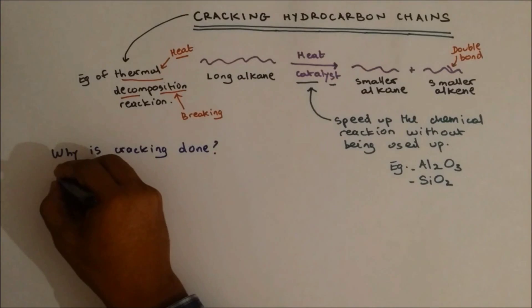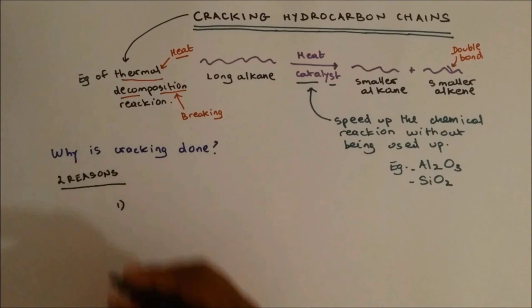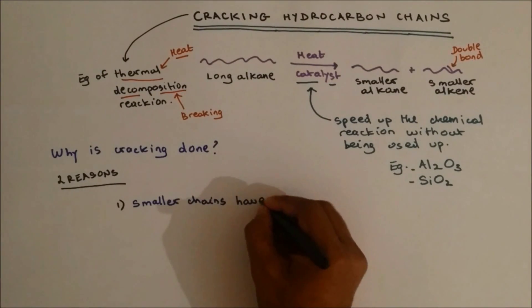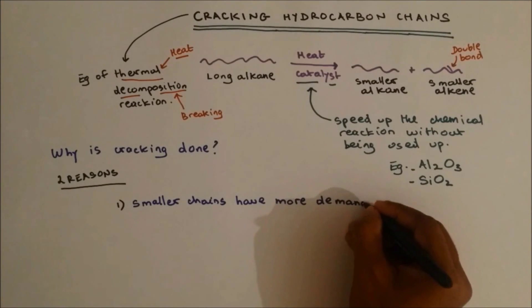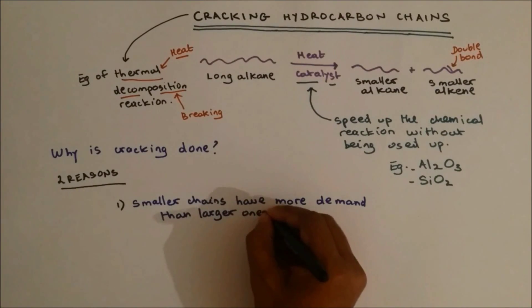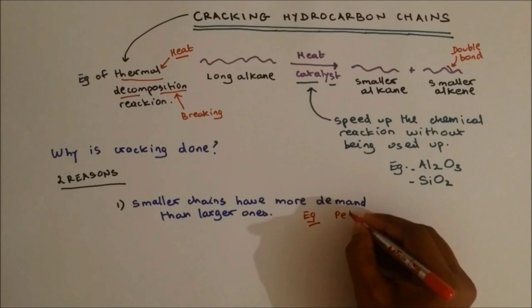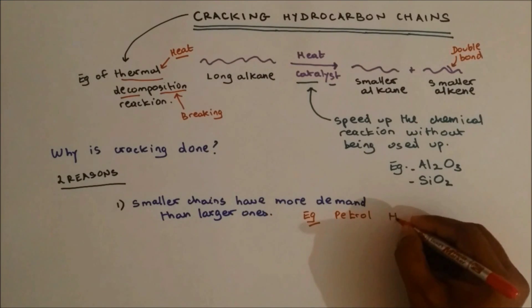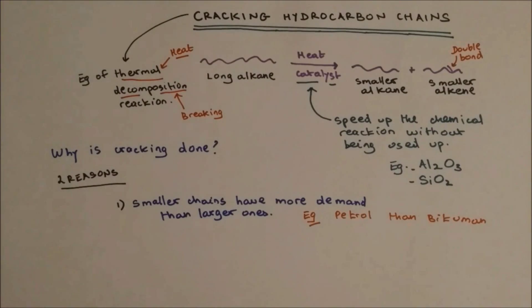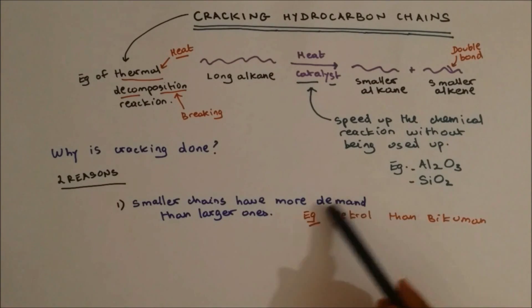Cracking is done for two reasons. Number one, the first reason is that smaller chains have more demand than larger ones. An example would be petrol — there is more demand for petrol than bitumen. So bitumen will be taken and broken down into petrol and other smaller chains because there's more need for petrol than bitumen.